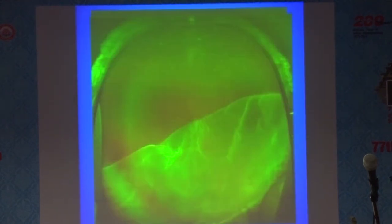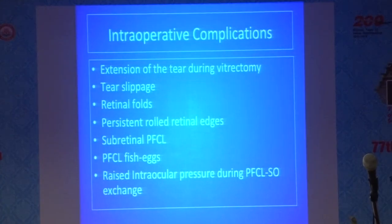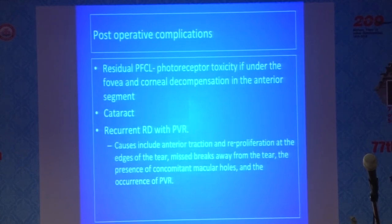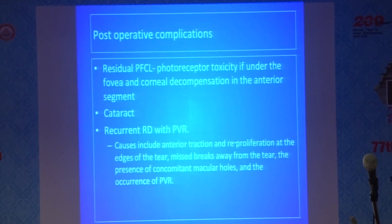Intraoperative complications can include extension of the tear during vitrectomy, tear slippage, retinal folds, persistent rolled retinal edges, subretinal PFCL, PFCL fish eggs, and raised intraocular pressure during the PFCL-to-silicone-oil exchange. Postoperative complications include residual PFCL — which may lead to photoreceptor toxicity under the fovea and corneal decompensation if retained too long in the anterior segment — progression of cataract, and recurrent detachments with PVR. Causes of recurrence include anterior traction, reproliferation at the edges of the tear, missed breaks, presence of concomitant macular holes, and the occurrence of PVR.